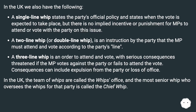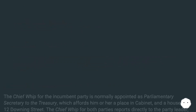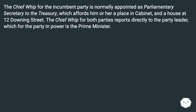In the UK, the team of whips are called the Whip's Office, and the most senior whip who oversees the whips for that party is called the Chief Whip. The Chief Whip for the incumbent party is normally appointed as Parliamentary Secretary to the Treasury, which affords him or her a place in cabinet and a house at 12 Downing Street.